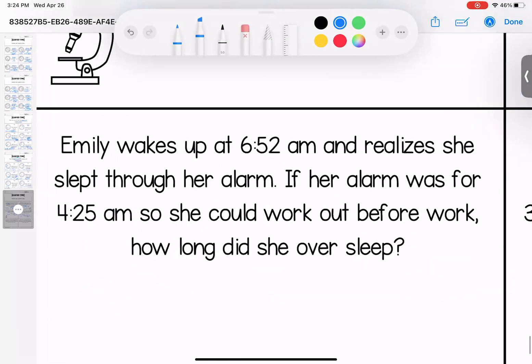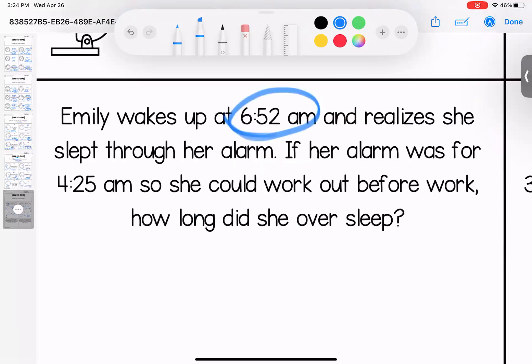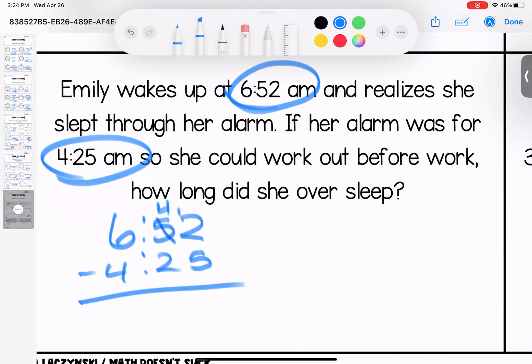Emily wakes up at 6:52 AM and realizes she slept through her alarm. If her alarm was set for 4:25 AM so she could work out before work, how long did she oversleep? So 6:52 take away 4:25, which would give us two hours and 27 minutes. She overslept two hours and 27 minutes.